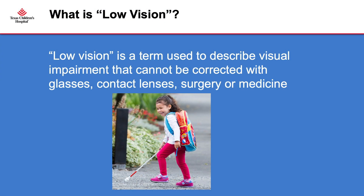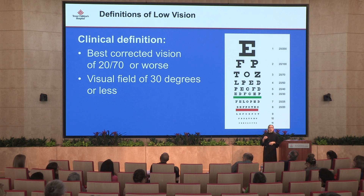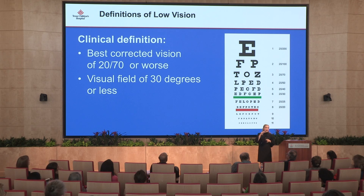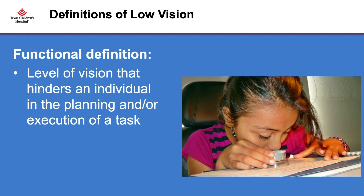There are two definitions for low vision: a clinical definition and a functional definition. The clinical definition is our medical-legal term — this is how we define who gets services. Visual impairment is characterized as best corrected vision of 20/70 or worse and a visual field of 30 degrees or less, whereas legal blindness is 20/200 or worse and a visual field of 20 degrees or less. The functional definition is any level of vision that impairs activities of daily living.